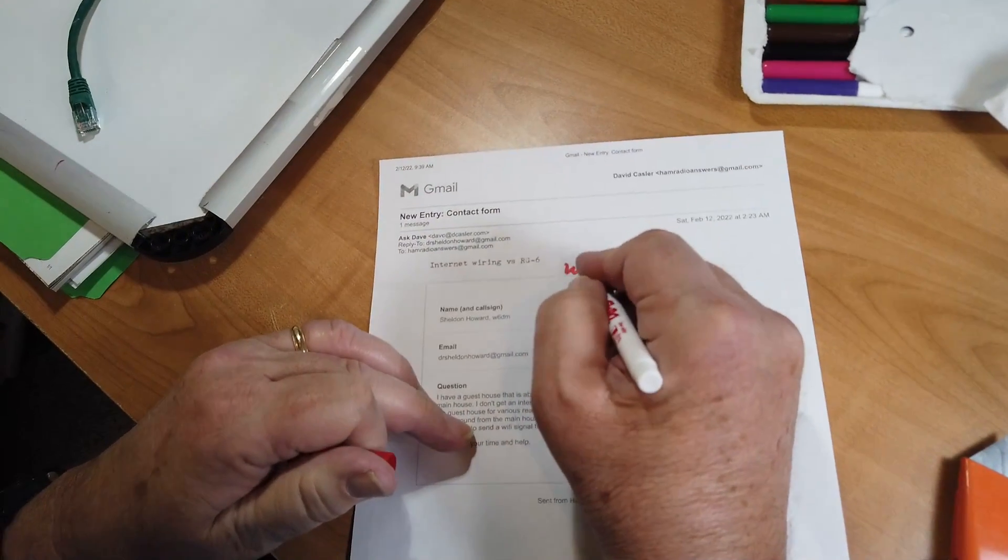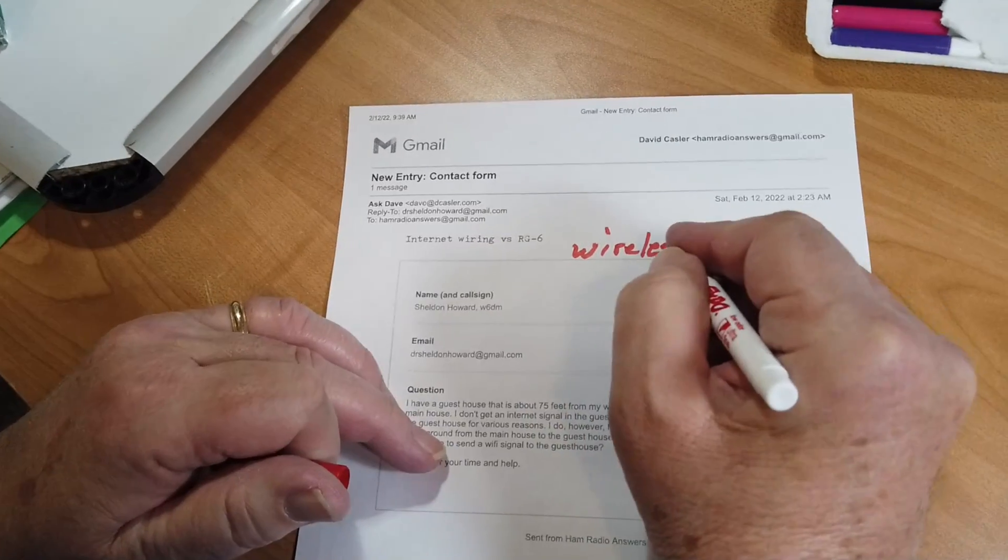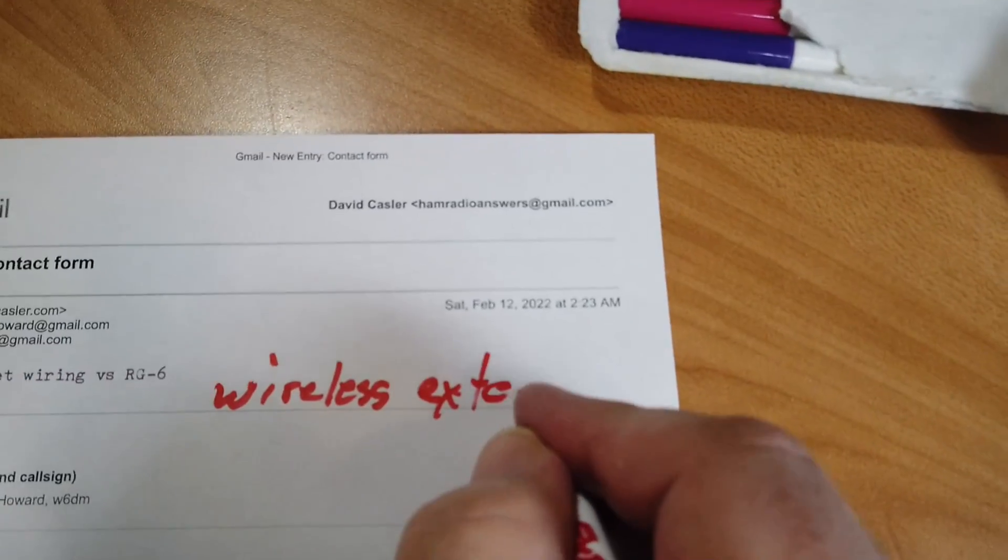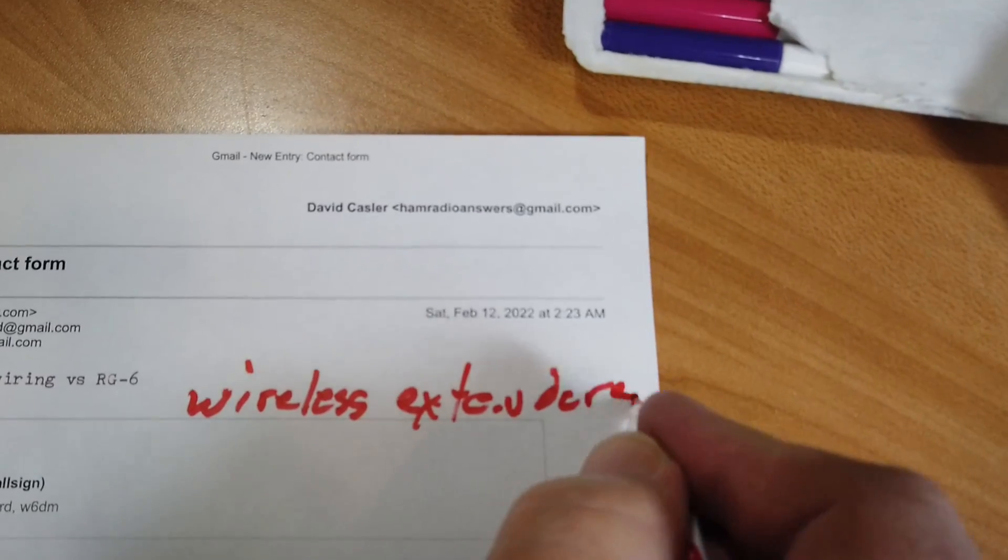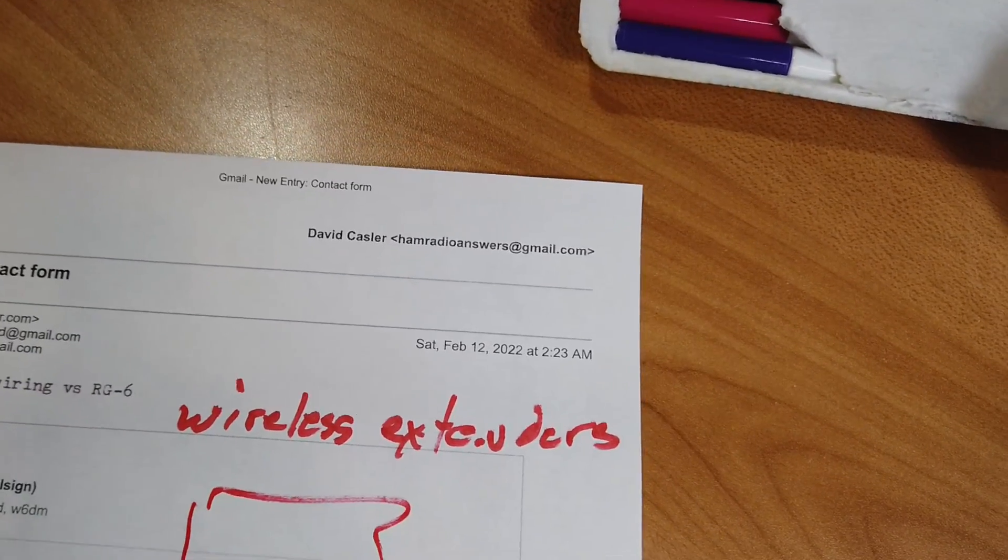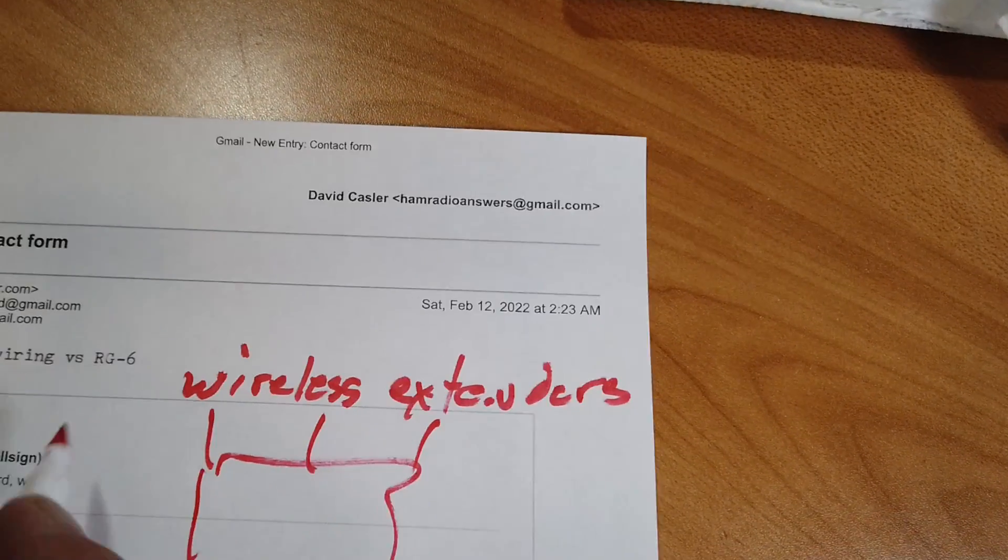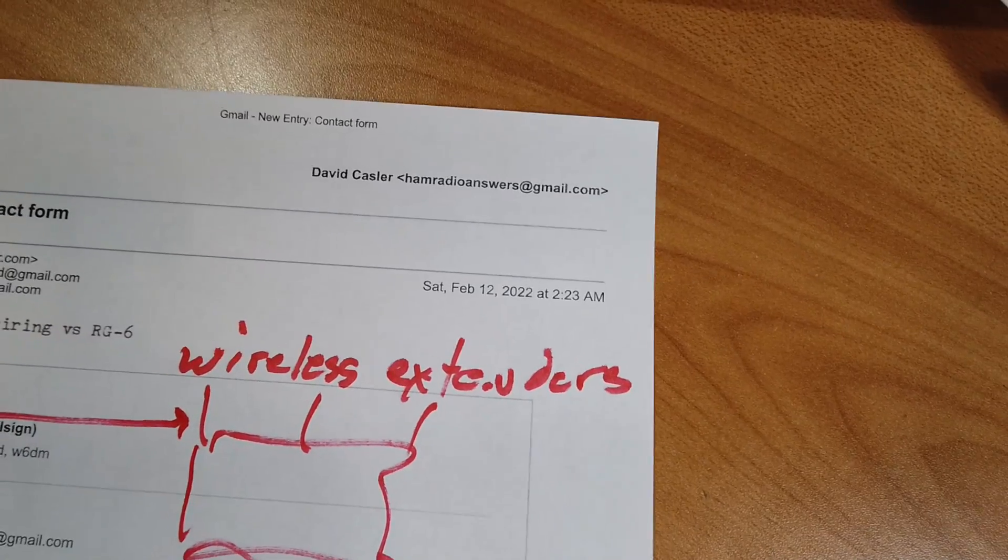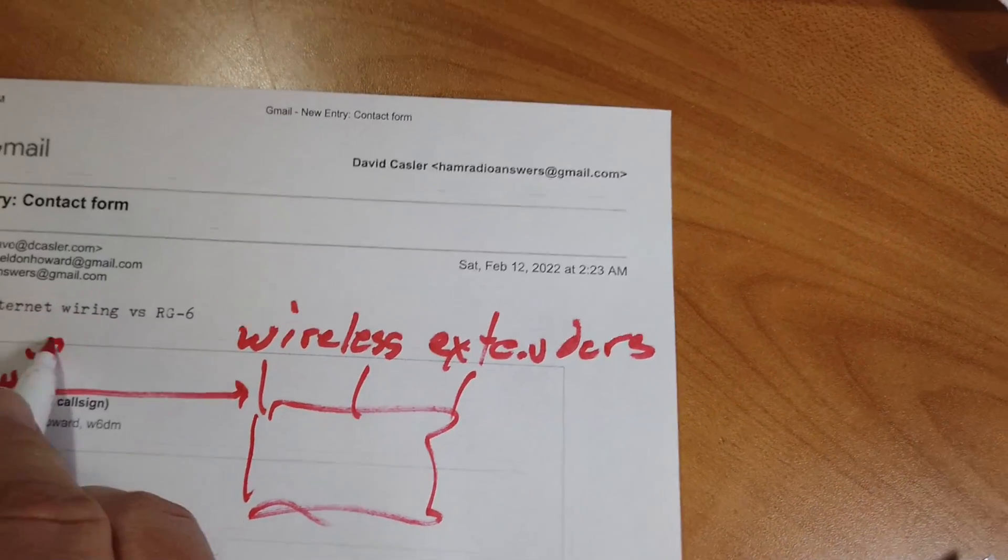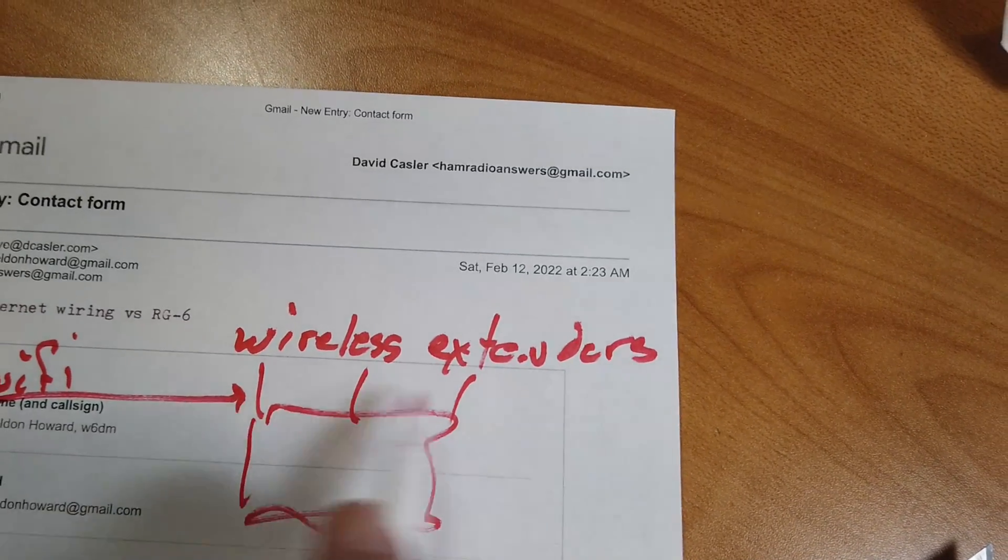Or more commonly, wireless extenders. Okay. Now, what they are is, they look like a router with antennas. Okay. But what these do is intercept a Wi-Fi signal and retransmit it on a different channel.